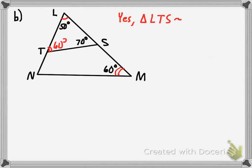Be careful with the similarity statement — make sure corresponding parts are in order. Angle L from the small triangle corresponds with angle L from the large triangle. Angle T in the smaller triangle doesn't correspond to angle N; it corresponds to angle M. And angle S corresponds with angle N. So those are the similar triangles by the Angle-Angle similarity postulate. Thanks for watching!